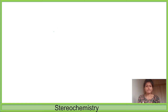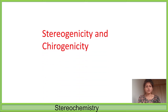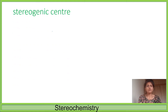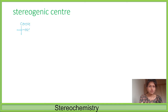Hello students, today I will teach you about stereogenicity and chirogenicity. First of all, what is meant by the stereogenic center? For this I will give one example. Suppose we have lactic acid: COOH, OH, hydrogen, and methyl. This is the formula of lactic acid. Here this is the chiral carbon.